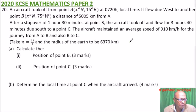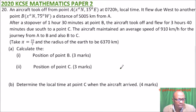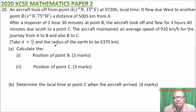Part A: calculate the position of point B — 3 marks. Position of point C — 3 marks. Part B: determine the rocket time at point C when the aircraft arrived. This question is from the topic of navigation.